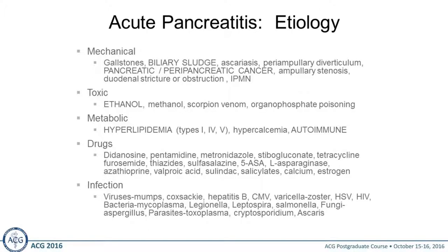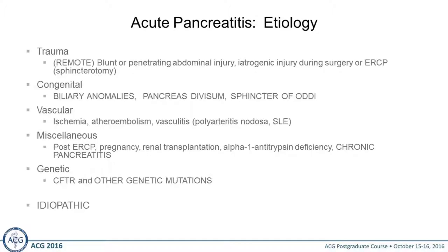In regard to etiology, there are multiple etiologies — mechanical causes, toxic causes, metabolic, drugs, infections, trauma, congenital anomalies, vascular problems, miscellaneous causes, post-ERCP pancreatitis, genetics, and of course the idiopathic group. I would say in about 85% of patients we can find the cause of recurrent acute pancreatitis. There's probably a 15% to 20% where we're not quite sure. But now that we have genetic testing, that idiopathic group is actually becoming smaller.